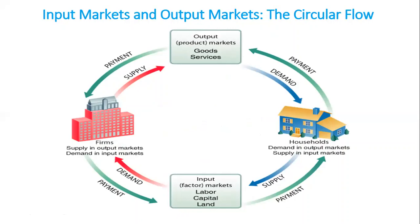Households — their main function is to consume, and firms — their main function is to produce. In order to produce, these firms need resources that will be supplied by the households, like labor, capital, and land. And in return, these firms will pay salaries and wages, profit, and rent to the households.